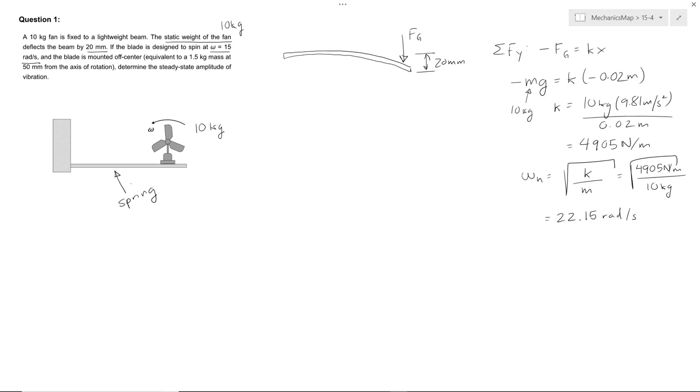So we can figure out the magnitude of that forcing function by imagining our fan like this. It's 1.5 kilograms rotating at a distance of 50 millimeters, and at a magnitude omega equals omega naught, or a forcing frequency, of 15 rads per second.